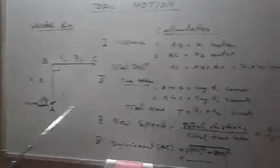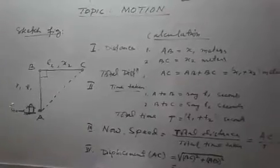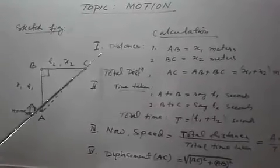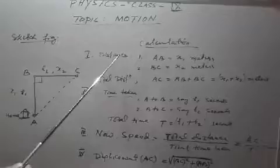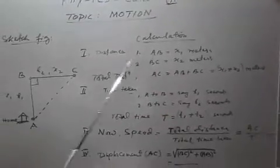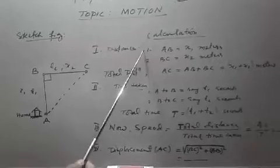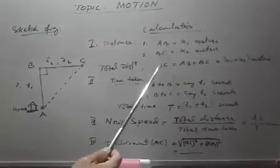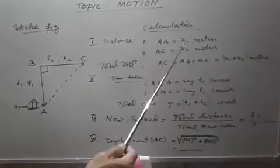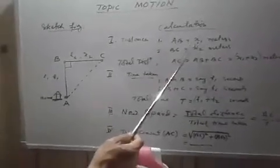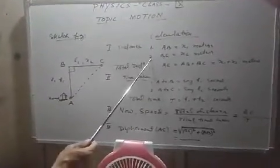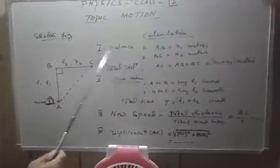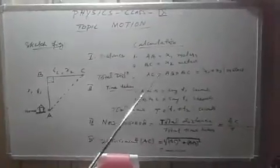Now when we come to the calculation part, you will need this one to calculate the required things. The first thing is let us find out the distance. To find the distance, as I have told you, we have two things here: one point A to B distance we record it by measuring by the tape in terms of x1 meter. Then A to B portion is over, then second B to C portion is x2 meters.